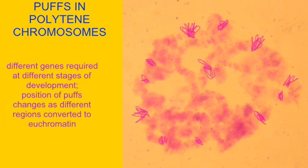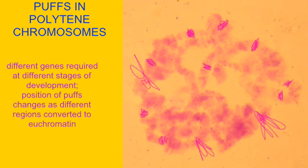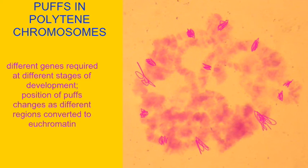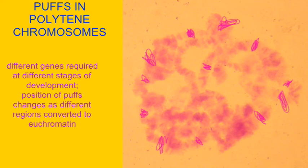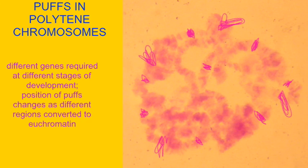It is evident that different genes are used at different stages of development because the larvae of Drosophila can be studied, and the puffs which form at one stage of development are different from those that form at other stages of development.